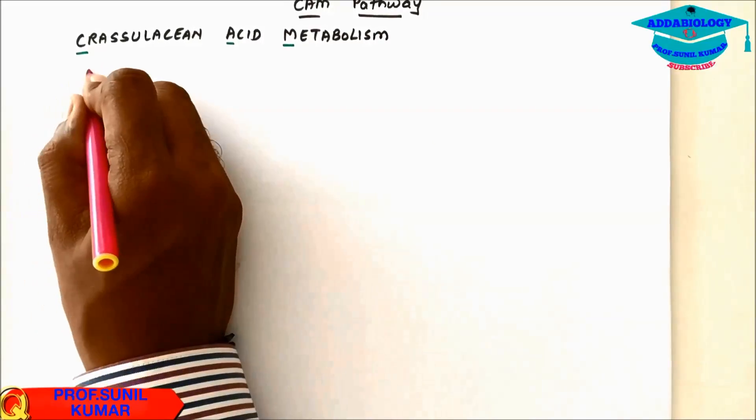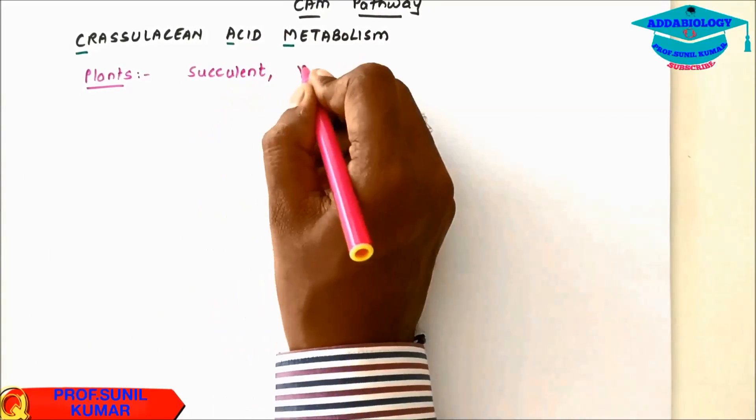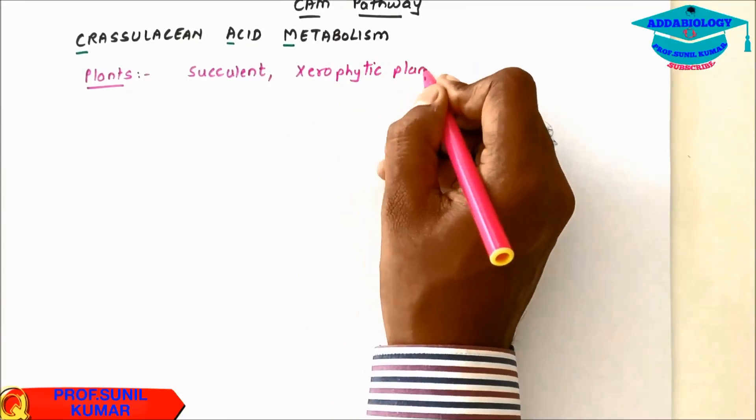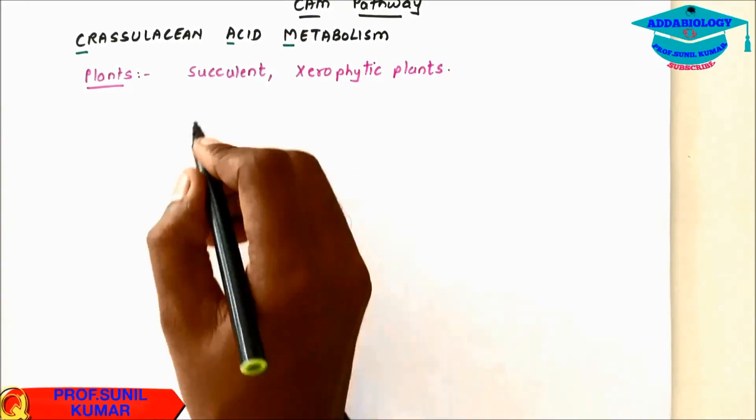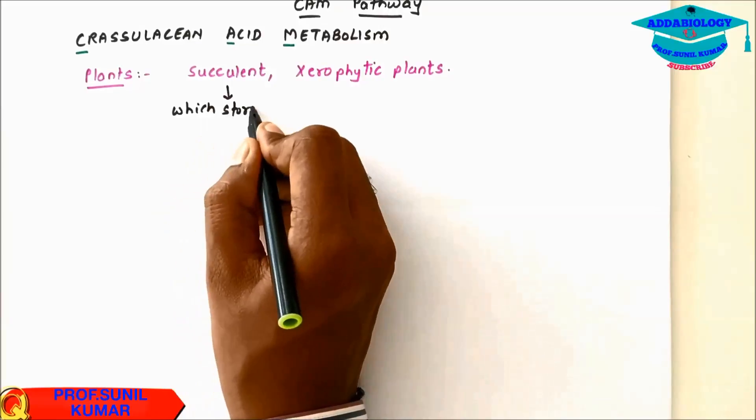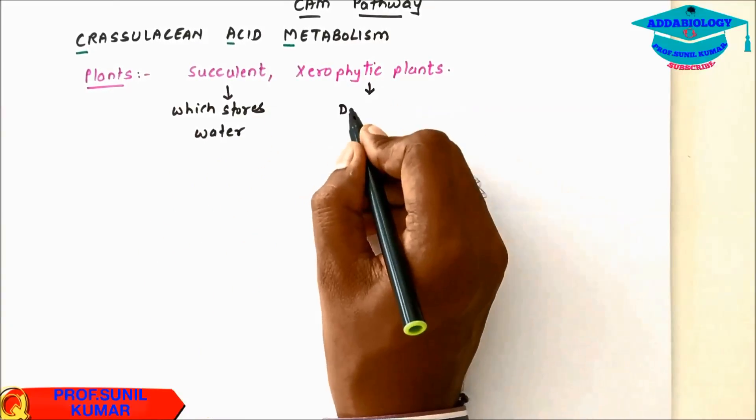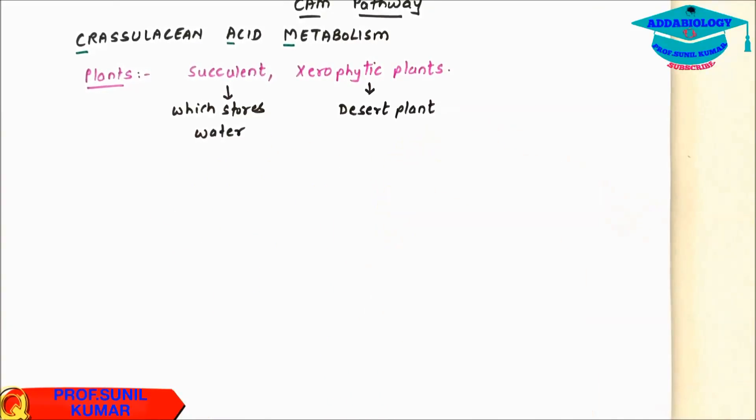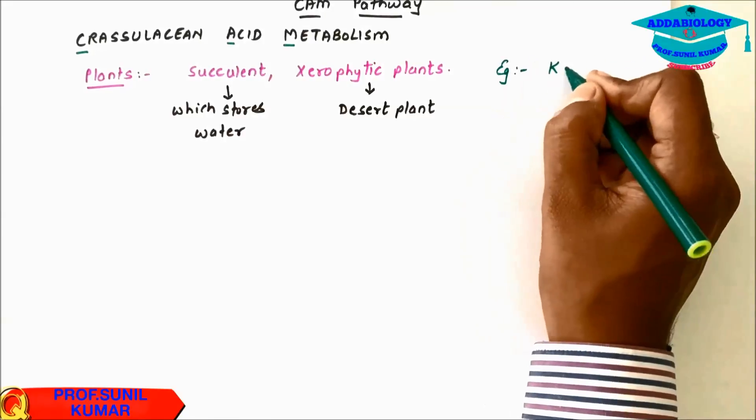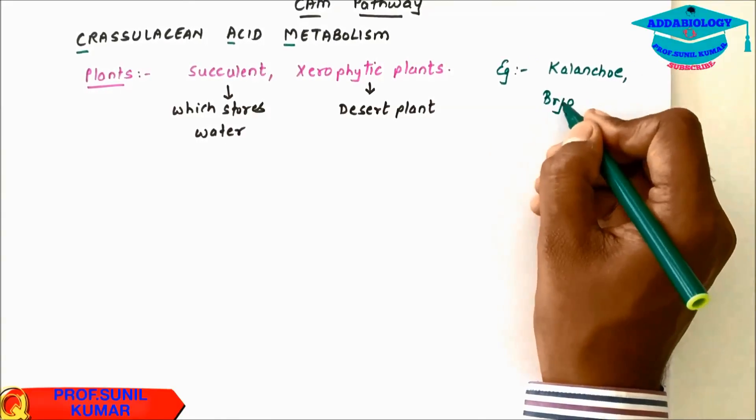CAM pathway is seen in plants which are succulent, xerophytic plants. Succulent means the plant which stores water. Xerophytic plants means the desert plants, e.g. Kalanchoe, Bryophyllum, Opuntia etc.